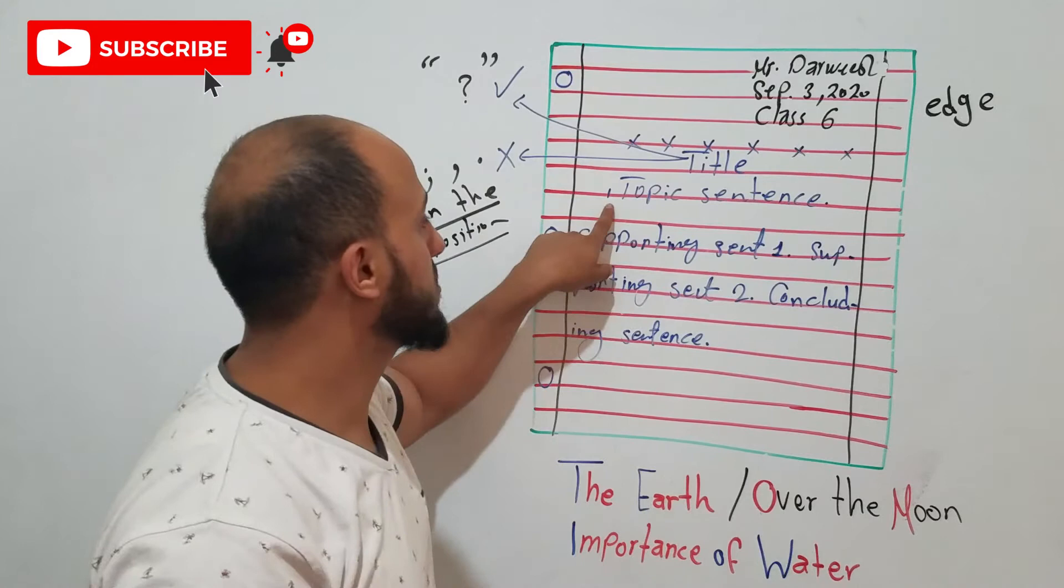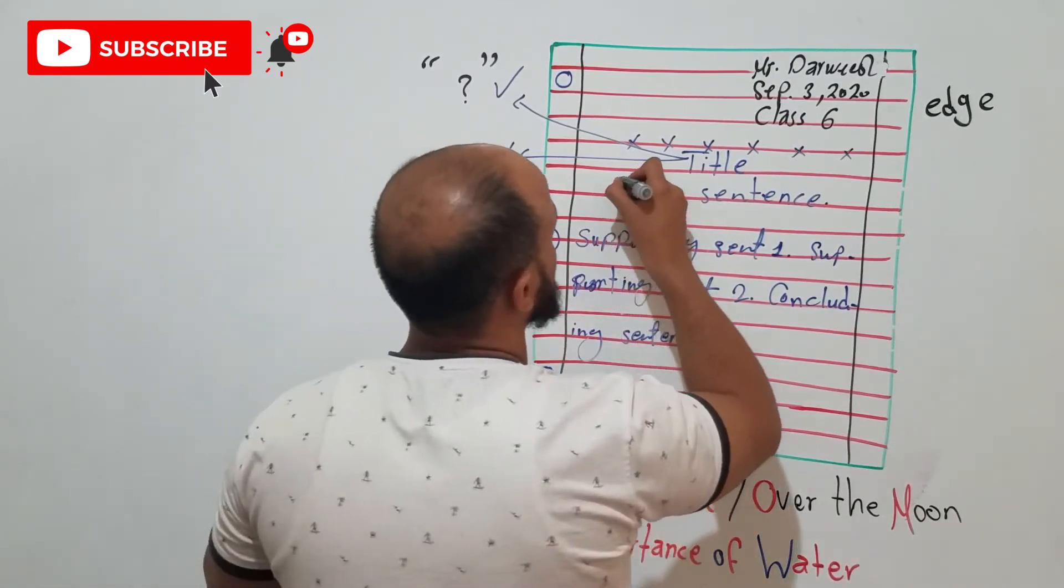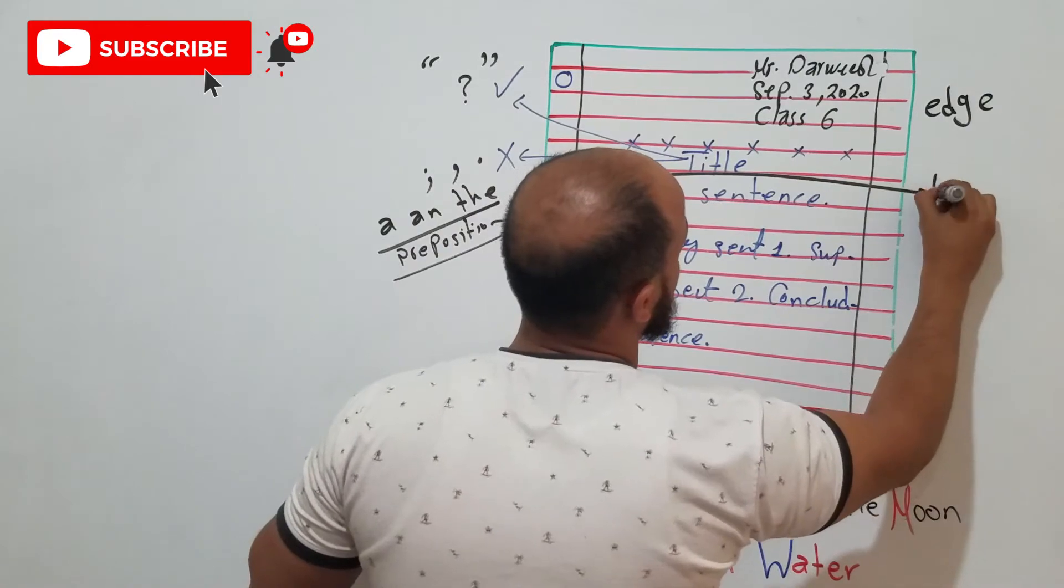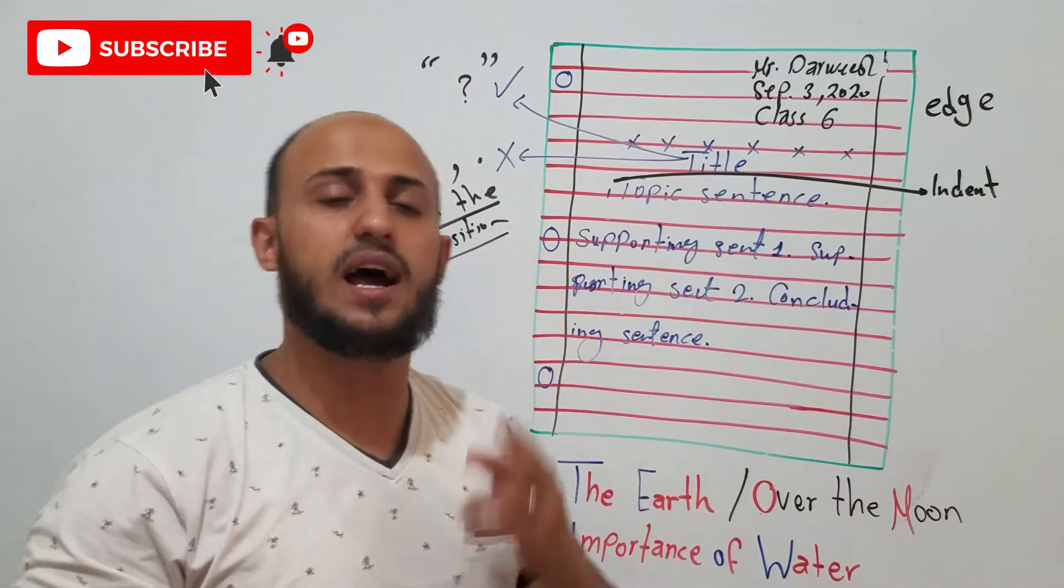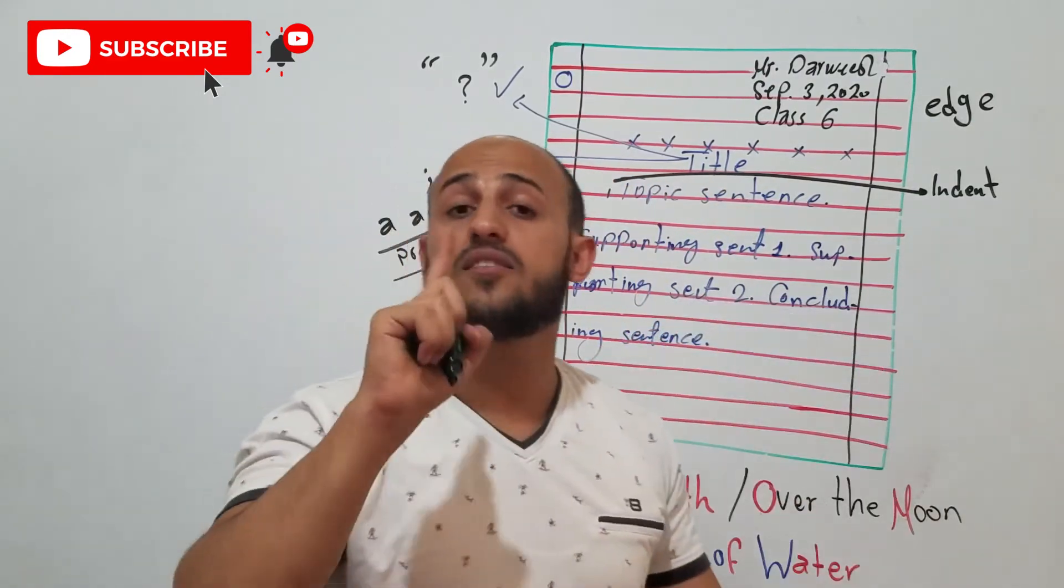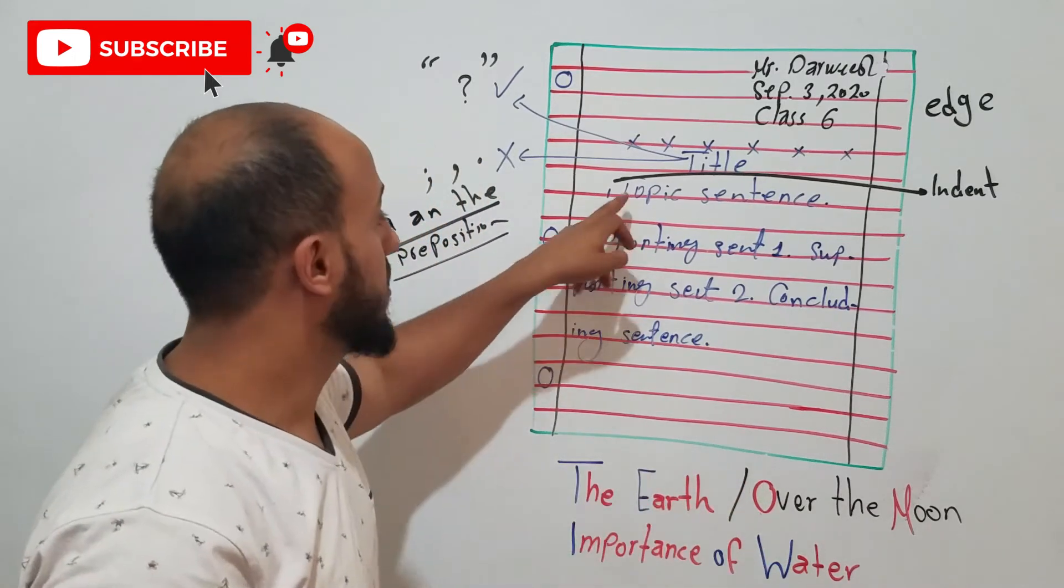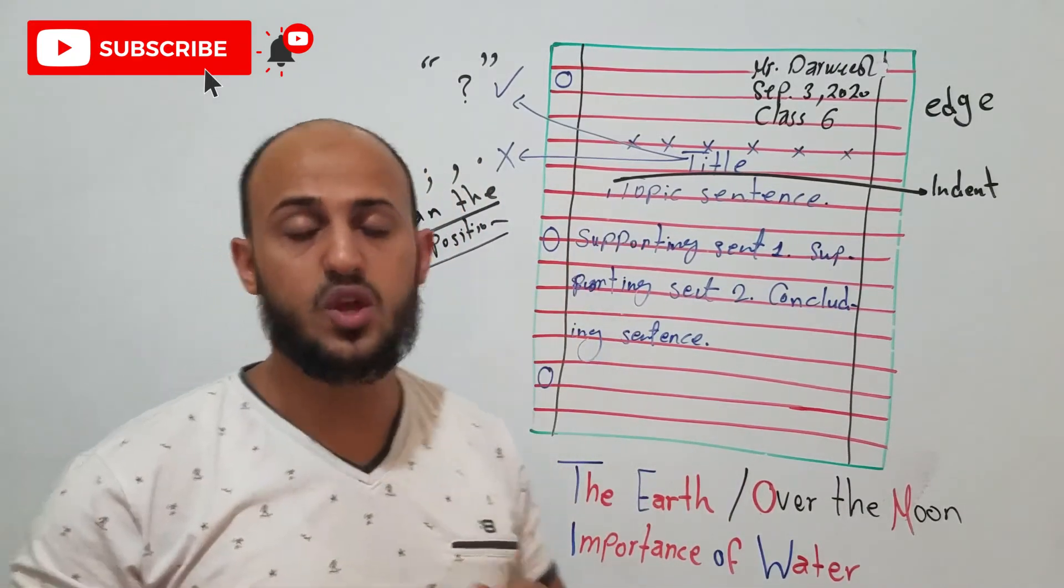That's all about it. Remember, guys, the first time, the first line, you need to indent. Indent here. We will take it here. Indent. So, indent a letter space as I showed you before. You have the paper. Put your finger. Start writing. The first line only. Then after that, I start it from the beginning.